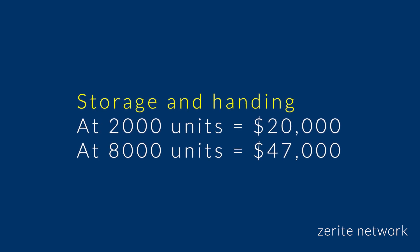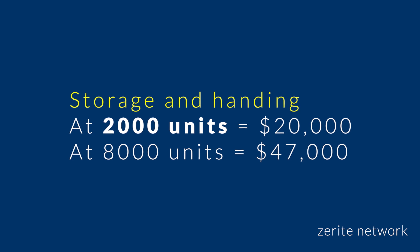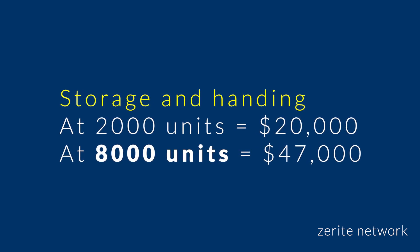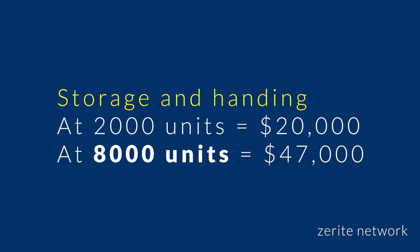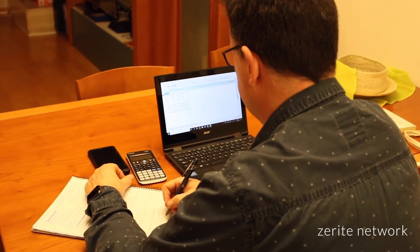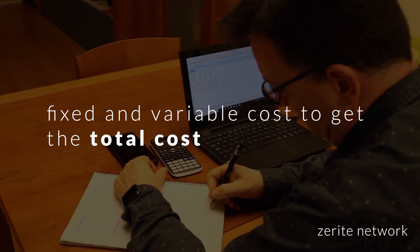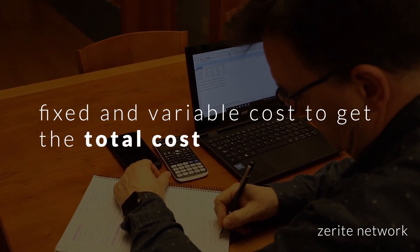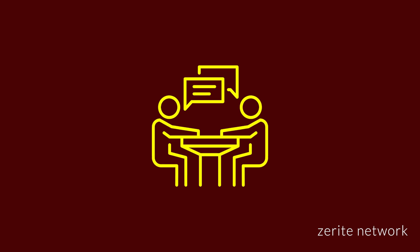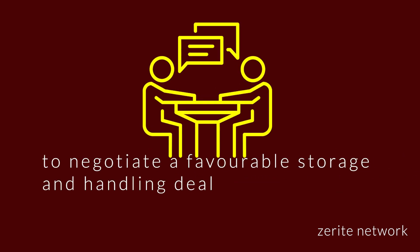So in this case, for storage and handling: at 2,000 units, you pay $20,000, and at 8,000 units, you pay $47,000. The assumption here is that your accountant is using fixed and variable cost to get the total cost. And you are supposed to use this information to negotiate a favorable storage and handling deal.